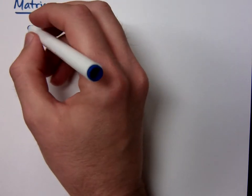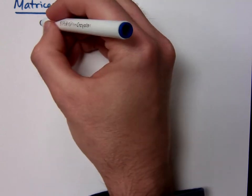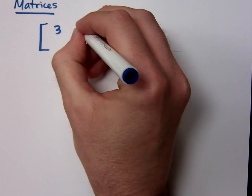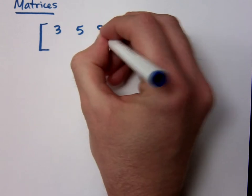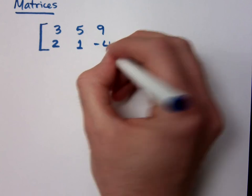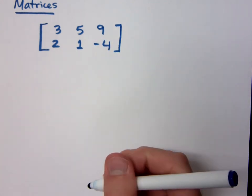Matrices - what we're going to do is take a system and rewrite it using a matrix. A matrix would be something using this kind of notation. We just have numbers in here like this, say like 3, 5, 9, 2, 1, negative 4. This is an example of a matrix.